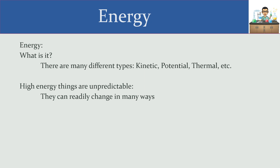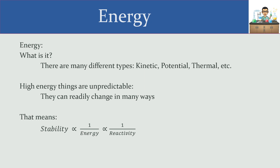Making these relationships between energy and how high-energy things readily change — the word we use to indicate change is reactivity. Tying all three things together: stability has an inverse relationship to energy, and stability is inversely related to reactivity. Energy and reactivity are going in the same direction, which is opposite from where stability is going. High-energy things are highly reactive and highly unpredictable, which is the opposite of stability.